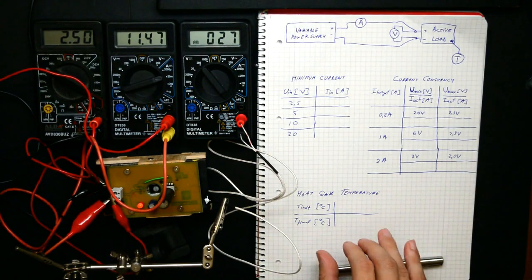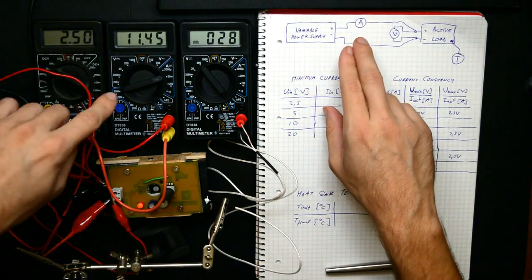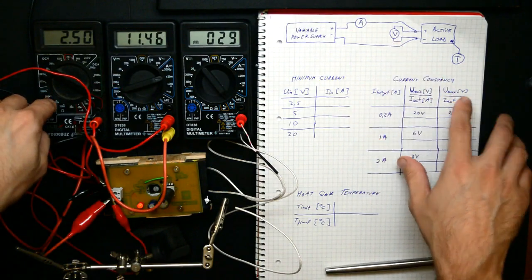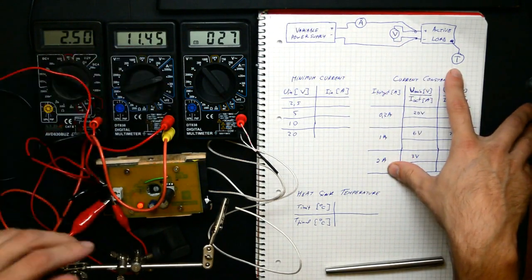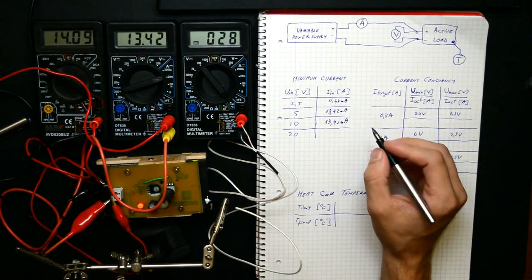And finally, see exactly how much the circuit actually heats up. For this I'm using a variable power supply, an amp meter, or milliamps in this case, volt meter, and finally temperature sensor, which I'm using to measure the temperature on the heatsink. So let's get started.